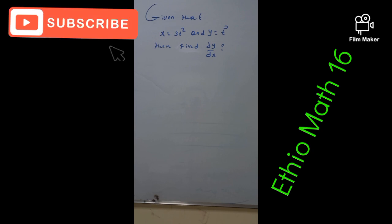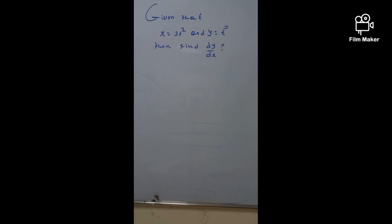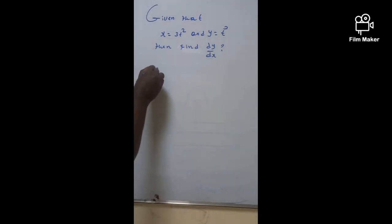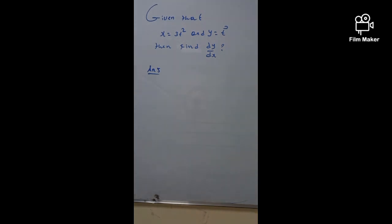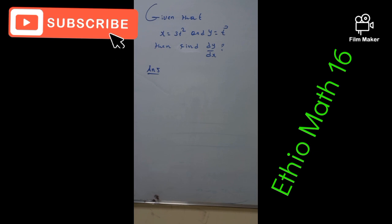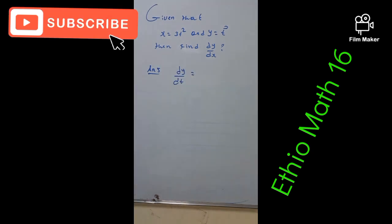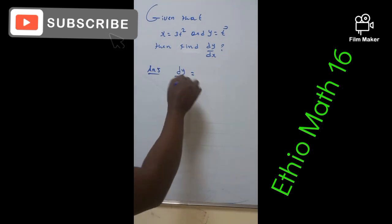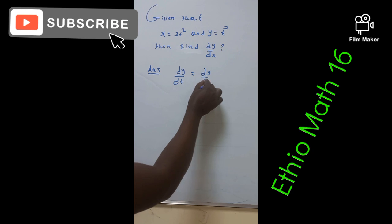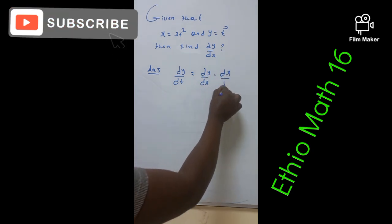In the case of this implicit differentiation, first of all you have to know how we are going to define dy by dx in general. Before we come to how we determine dy by dx, first we need to find what is dy by dt and dx by dt. So dy by dt can be defined through implicit differentiation as dy by dx times dx by dt.